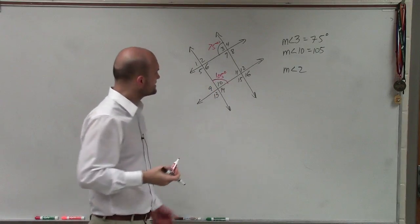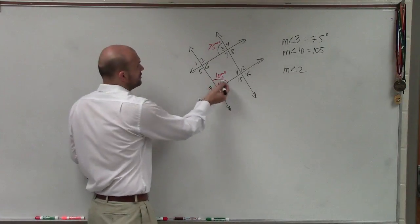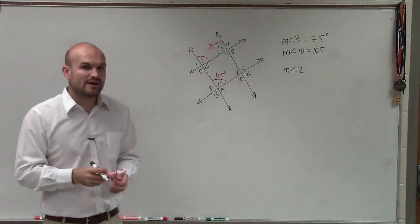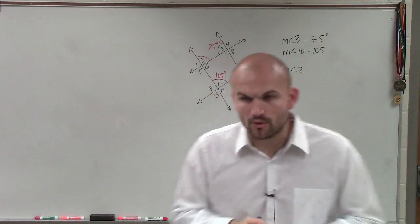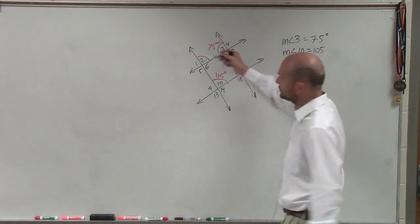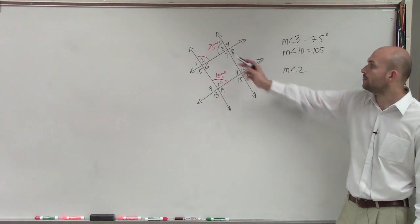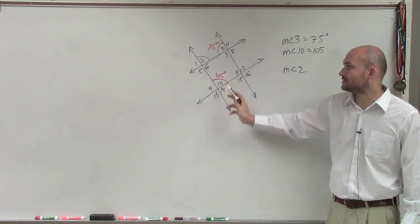Now, for this example, they're asking us to find the measure of angle 2, right? So there's a couple of different ways we can look at this. Phillip, what is one way that measure of angle 2 relates to one of the angles we know? What is the name of how it's related to either of these two angles?